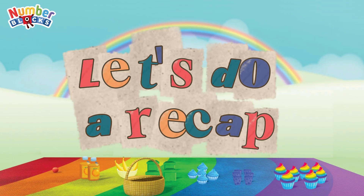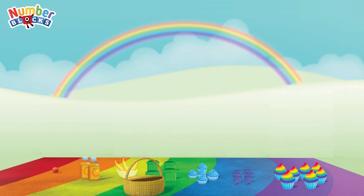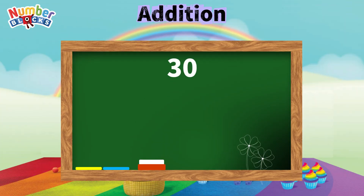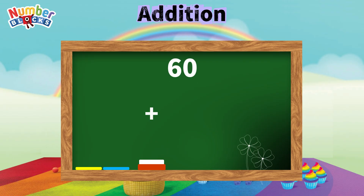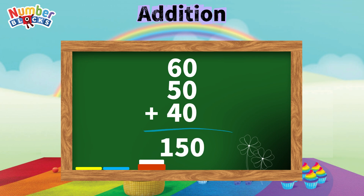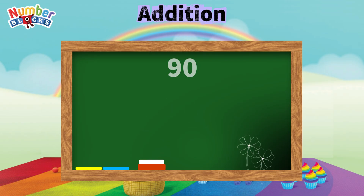Let's do a recap. Let's learn Addition. 30 plus 20 plus 10 is equals 60. 60 plus 50 plus 40 is equals 150. 90 plus 80 plus 70 is equals 240.